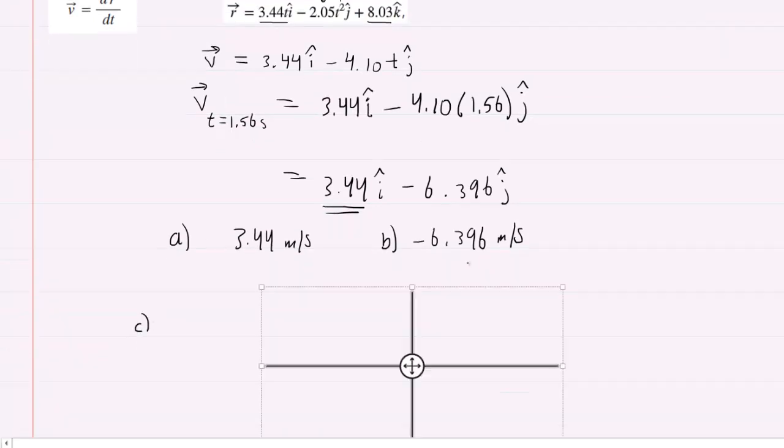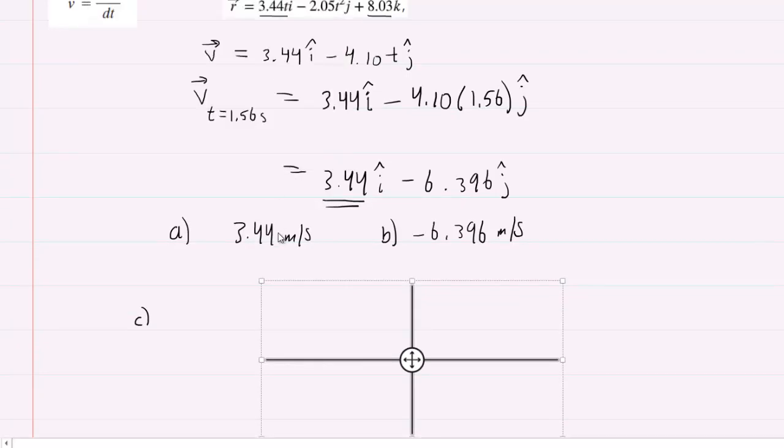So we'll draw a y and x axis, and then we'll take the x component, which was positive 3.44, and because it's positive, you're going to want to draw a vector along the positive x direction. And you can label that 3.44 meters per second.